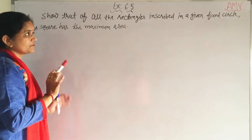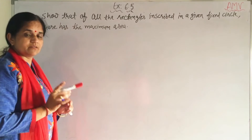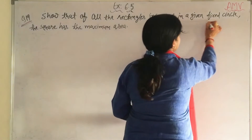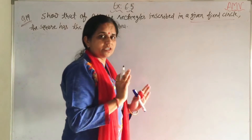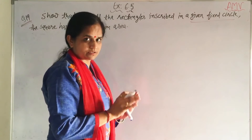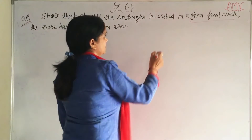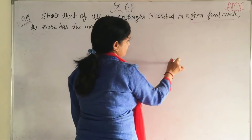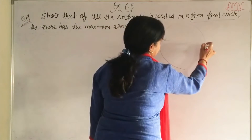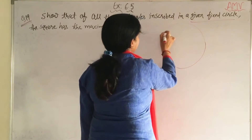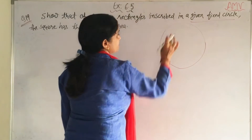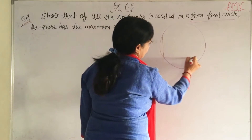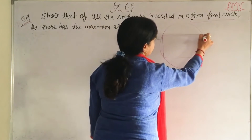From the question, we need to find the function in one variable. The circle is fixed, meaning the radius is a constant, not a variable. Let this be the circle with an inscribed rectangle ABCD. Suppose the center is O, radius is a, and we drop a perpendicular from O to the rectangle.